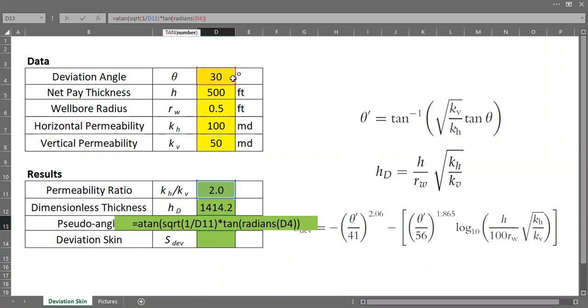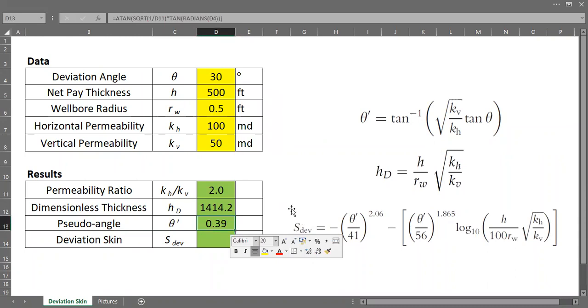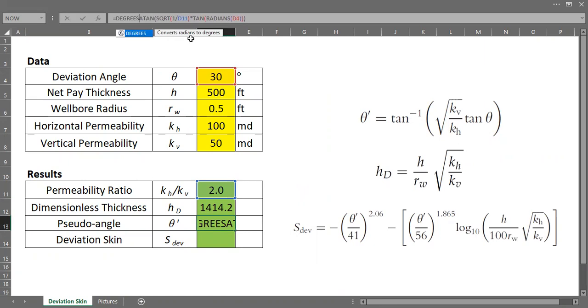So this is the number in radians. So please be careful. Radians of 30 and then tangent of this number. And then the arc tangent of the whole thing inside. So this is the number in radians. So I need to convert this number from radians to degree. And I can do that in Excel by using degrees. Converts radians to degrees. And then I will open here and close there. So the pseudo angle is 22.21.